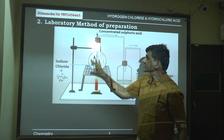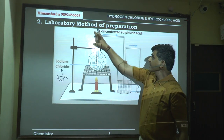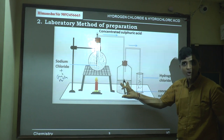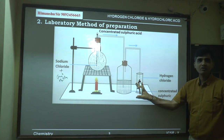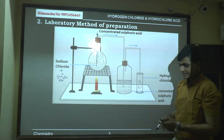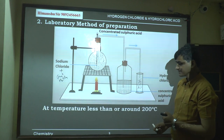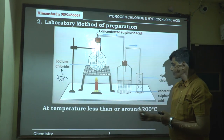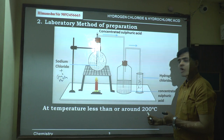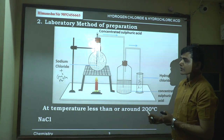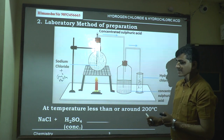When HCl gas starts forming, it is passed through a washing bottle and then collected. At a temperature below 200°C, this is the condition used for the laboratory preparation of hydrogen chloride gas.